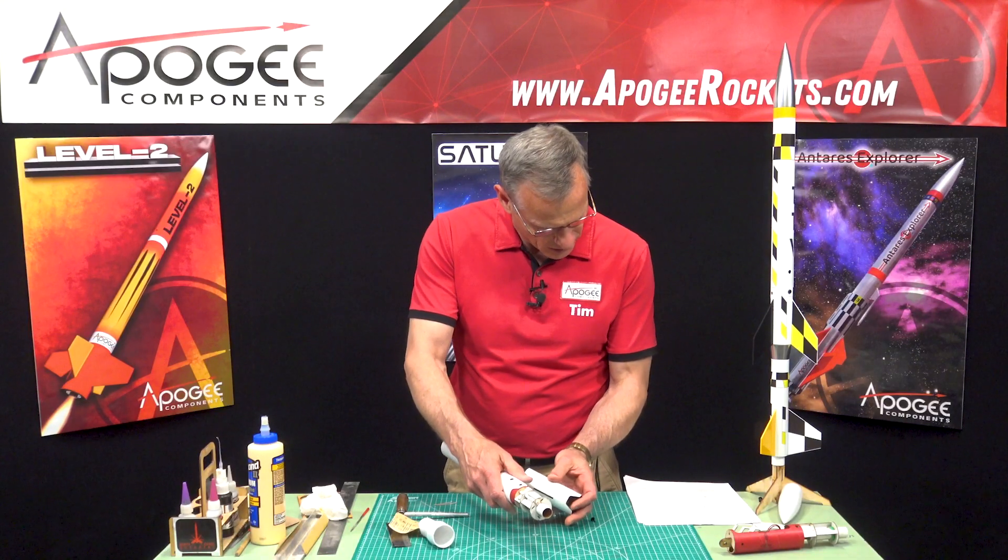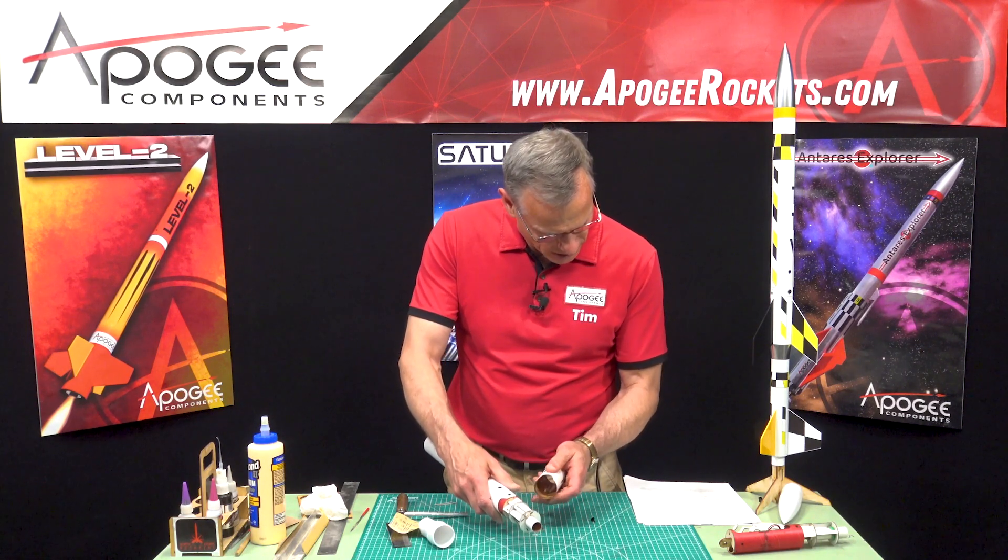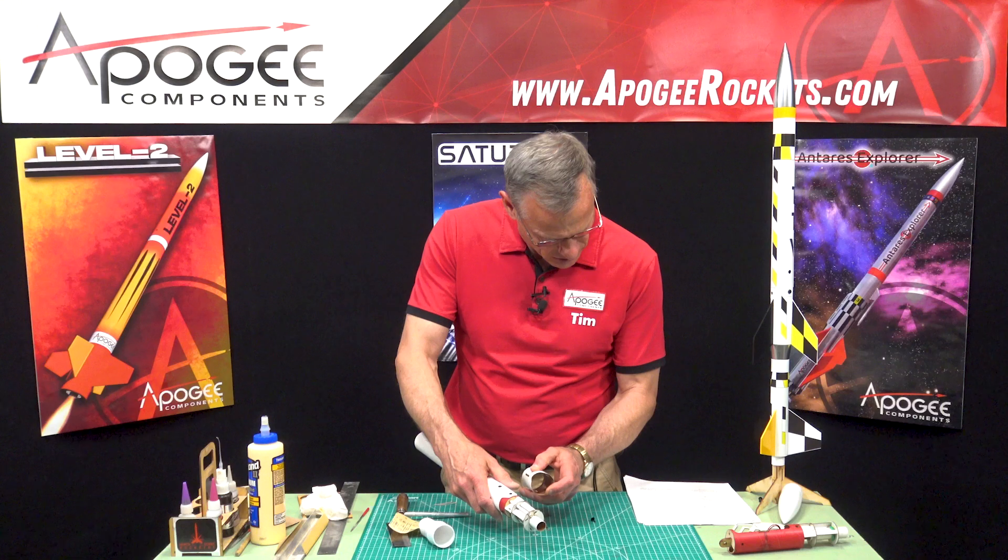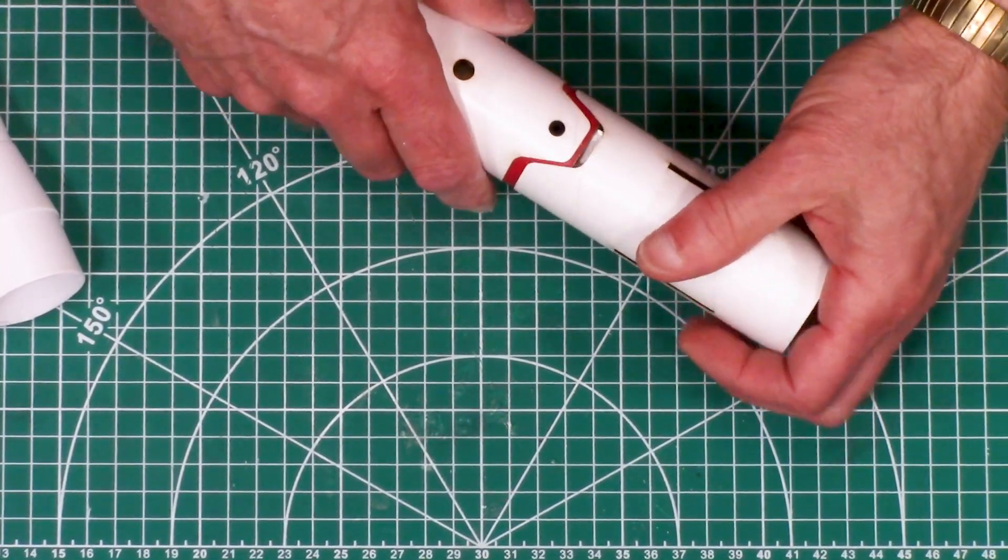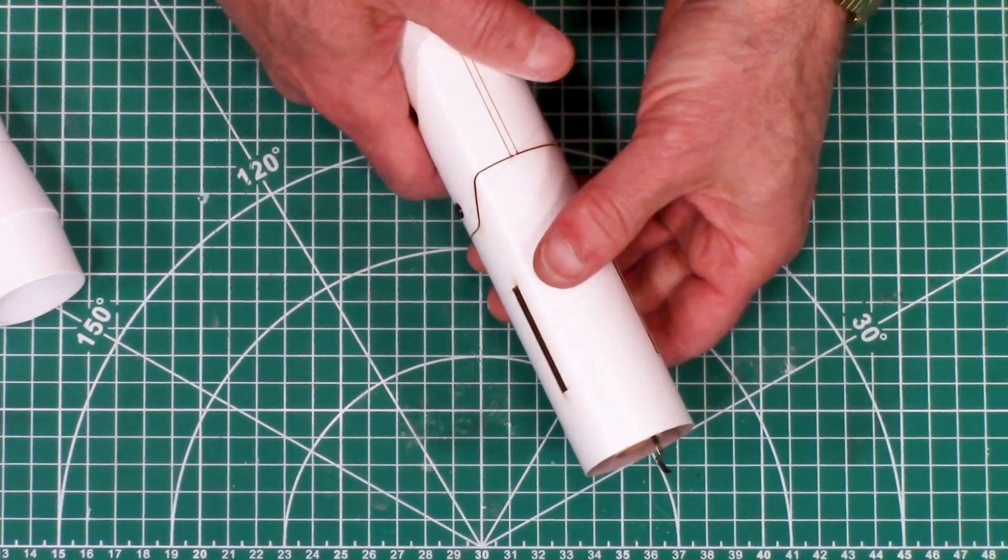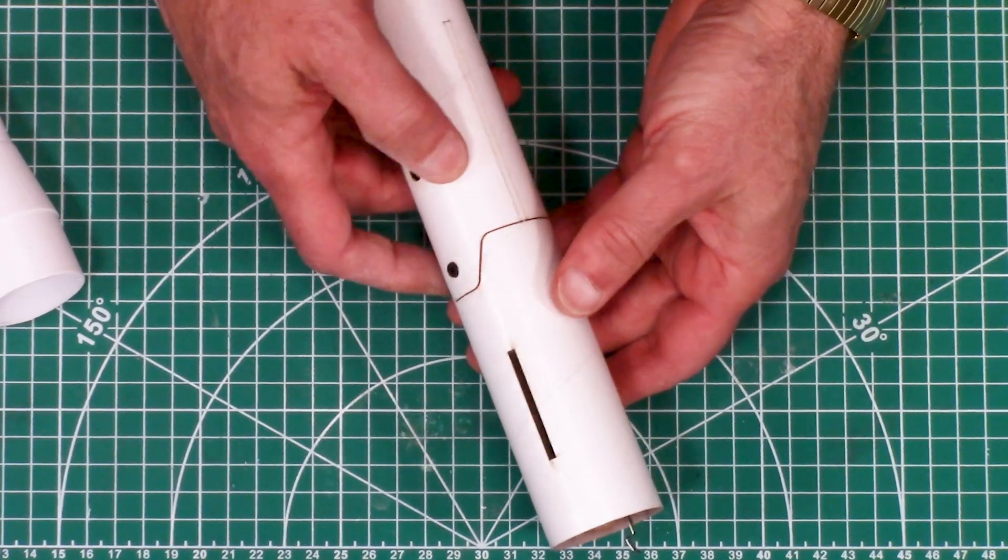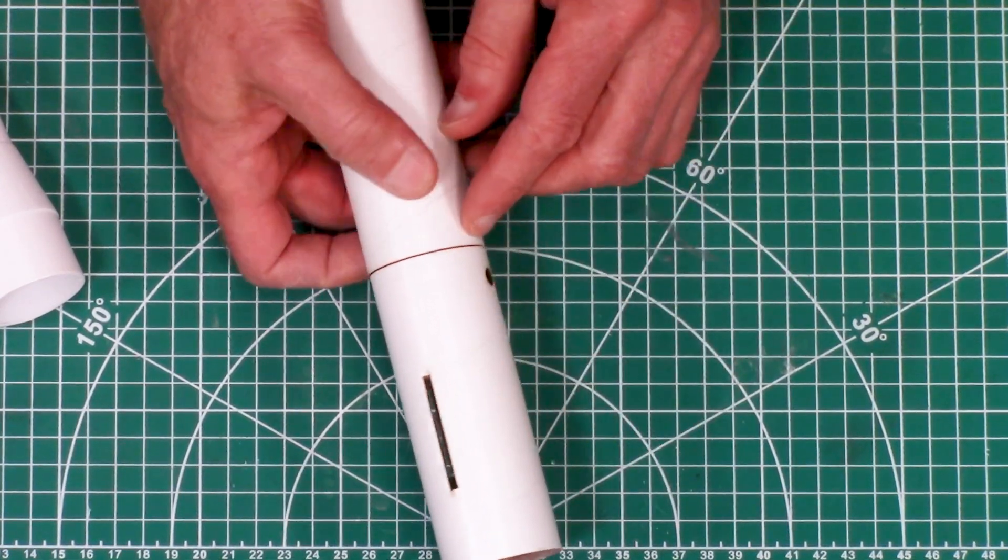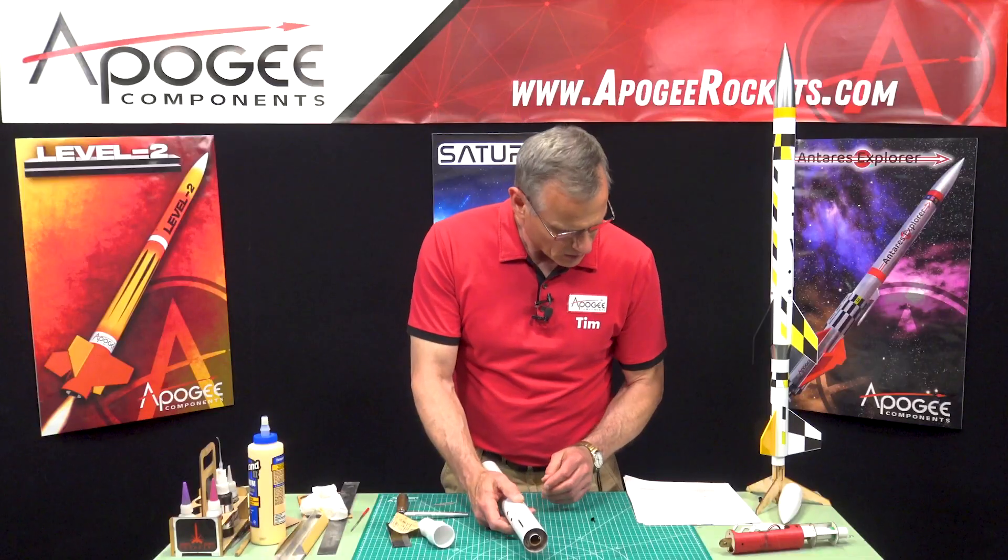Then slide it into the FinCan and align everything so that there's going to be a small gap. When we laser cut we're actually removing some of the tube, so just make sure there's an equal amount of gap all the way around.